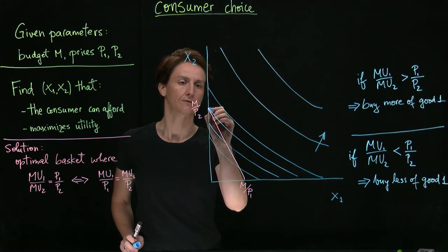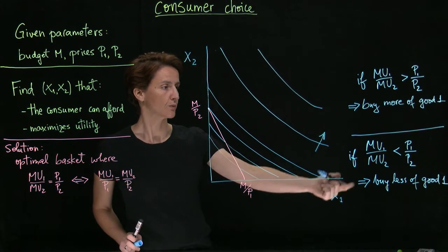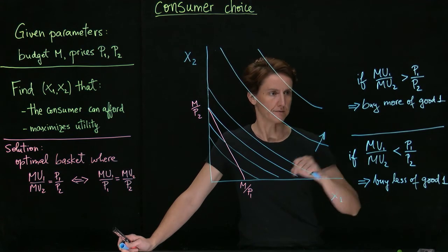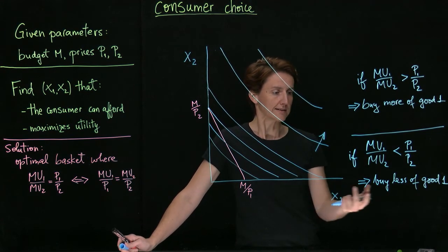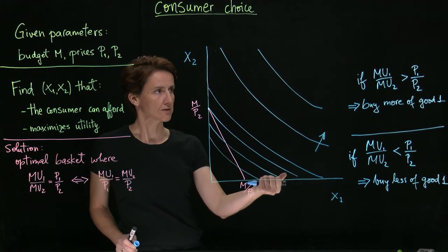So if on the axis where we're not buying any of good one, we nonetheless find that at the margin, good one is less valuable than good two, well, then that's just the best we can do. We don't have a tangency per se.